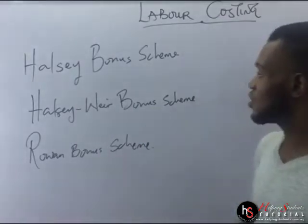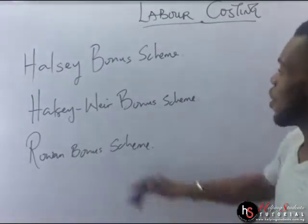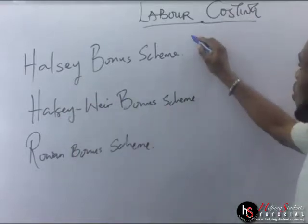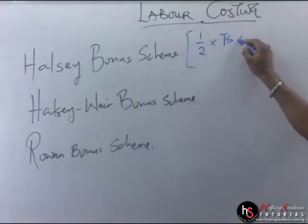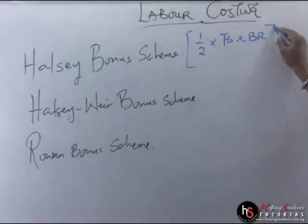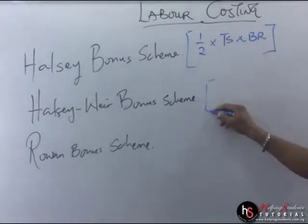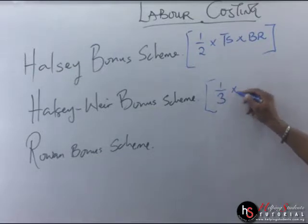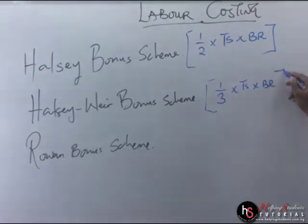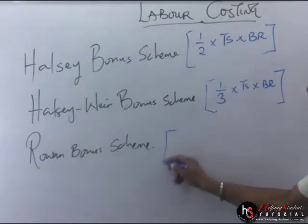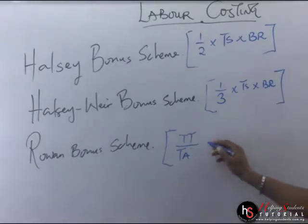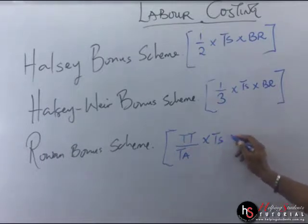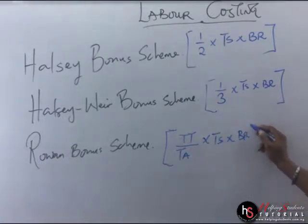Now, there are formulas for each scheme and we must know these formulas. For the house sale bonus scheme, the formula is 1/2 × TS × BR. For the house sale wear bonus scheme, it is 1/3 × TS × BR. And for the row one bonus scheme, it is TT/TA × TS × BR.